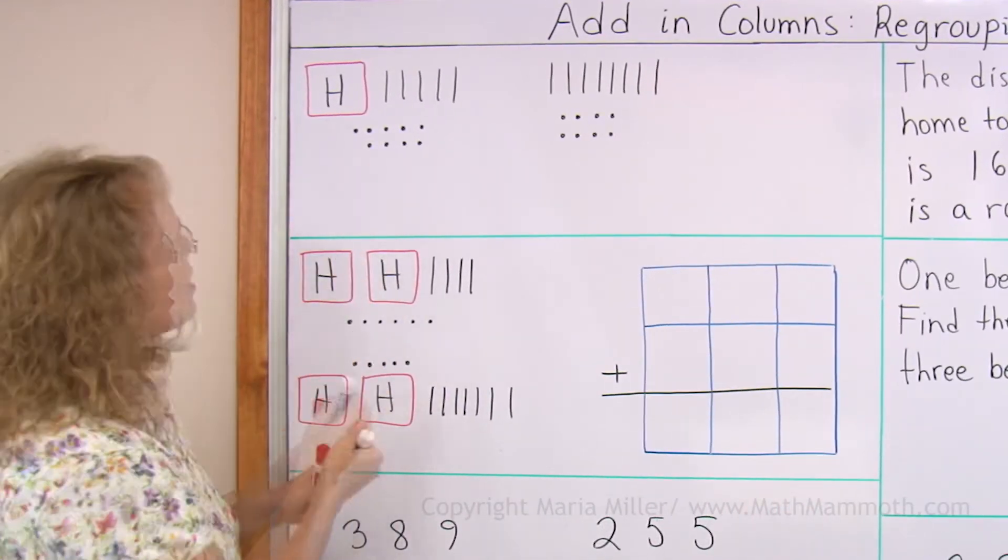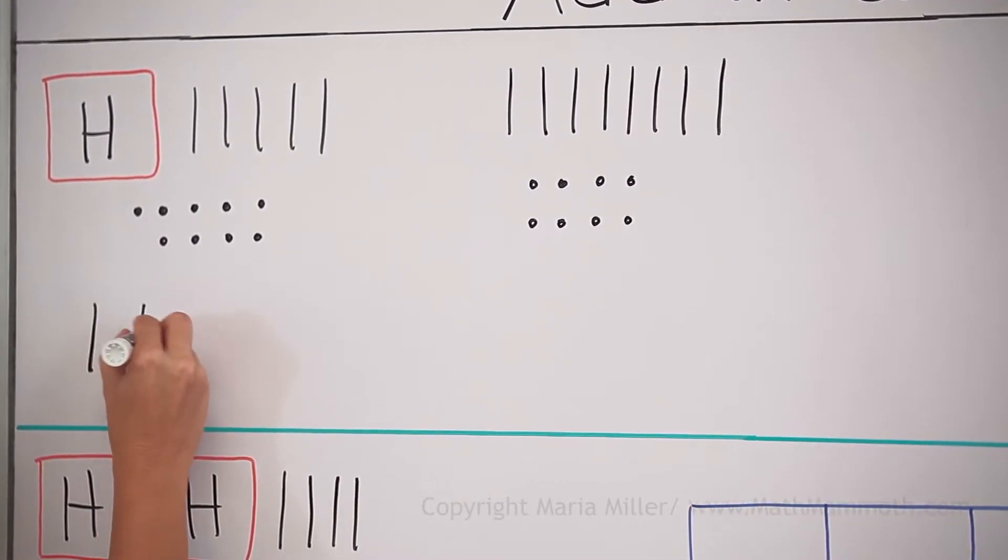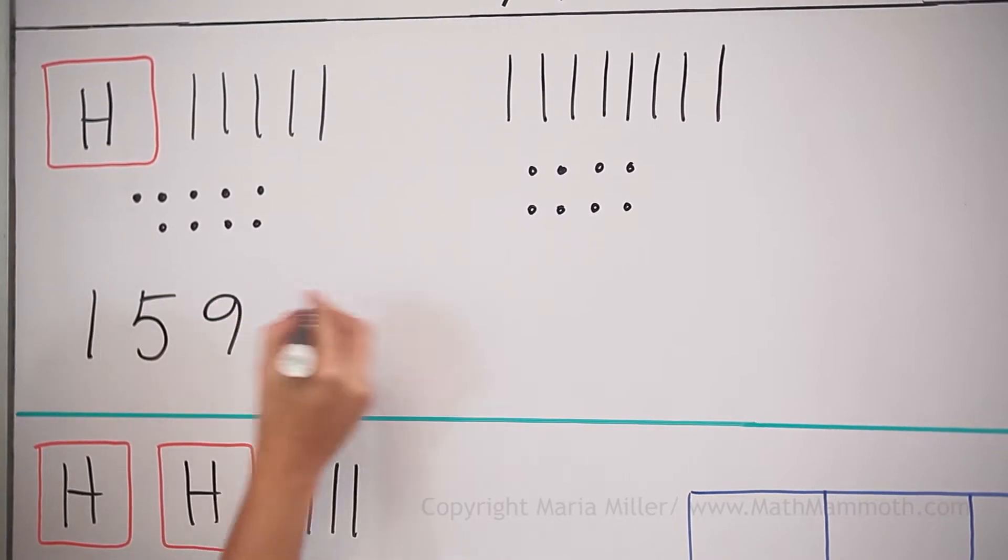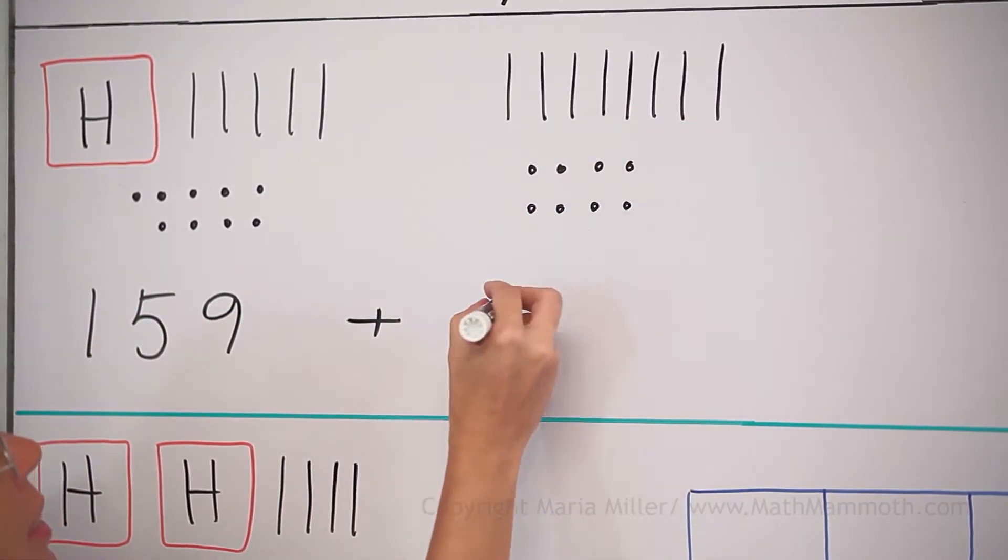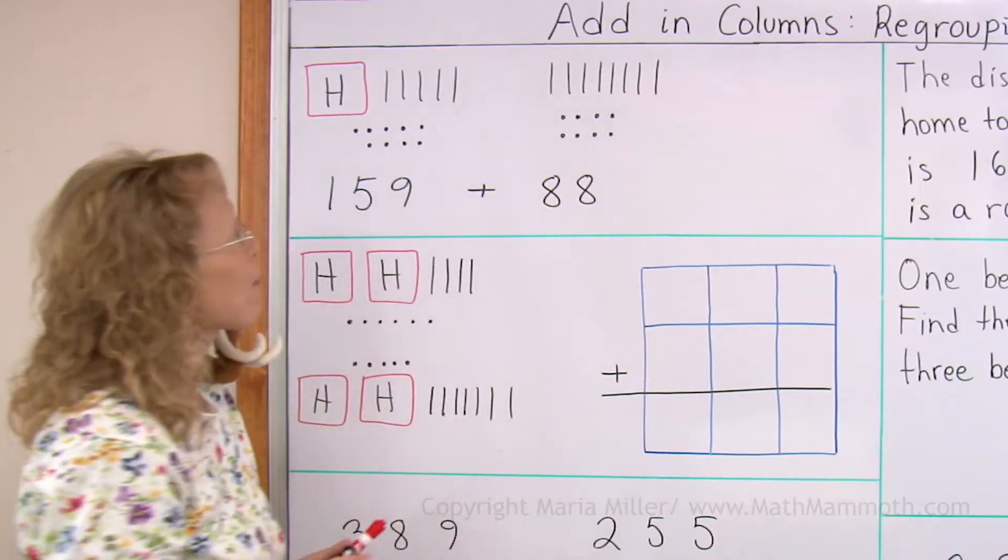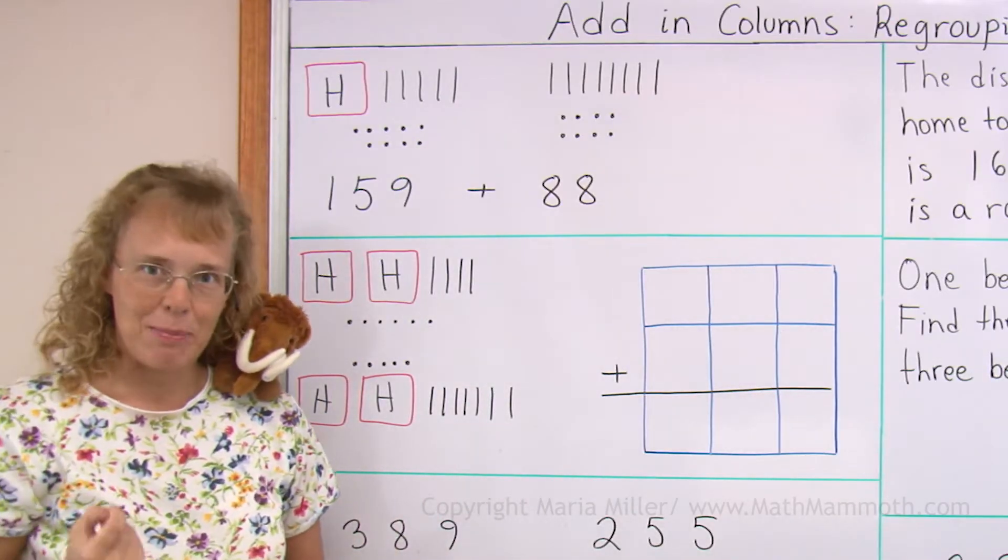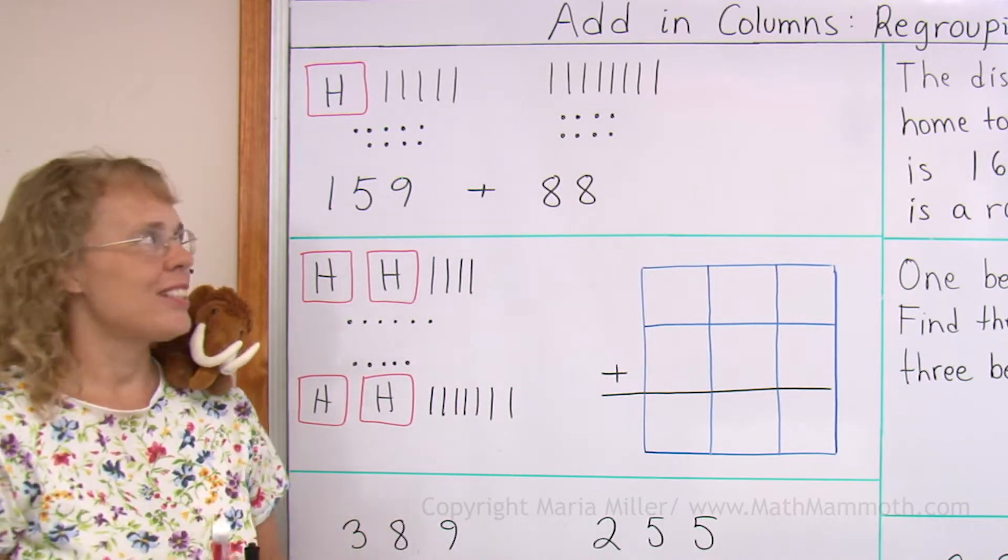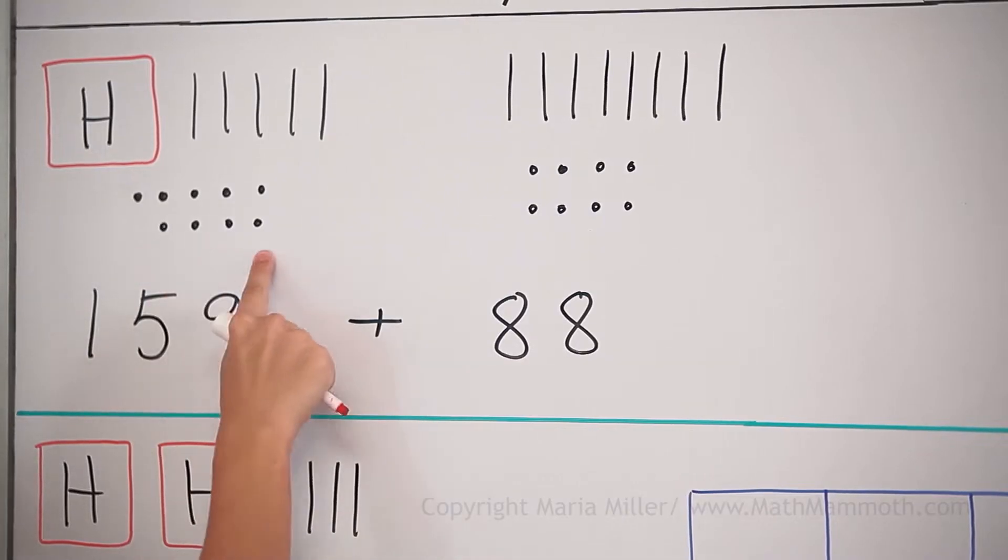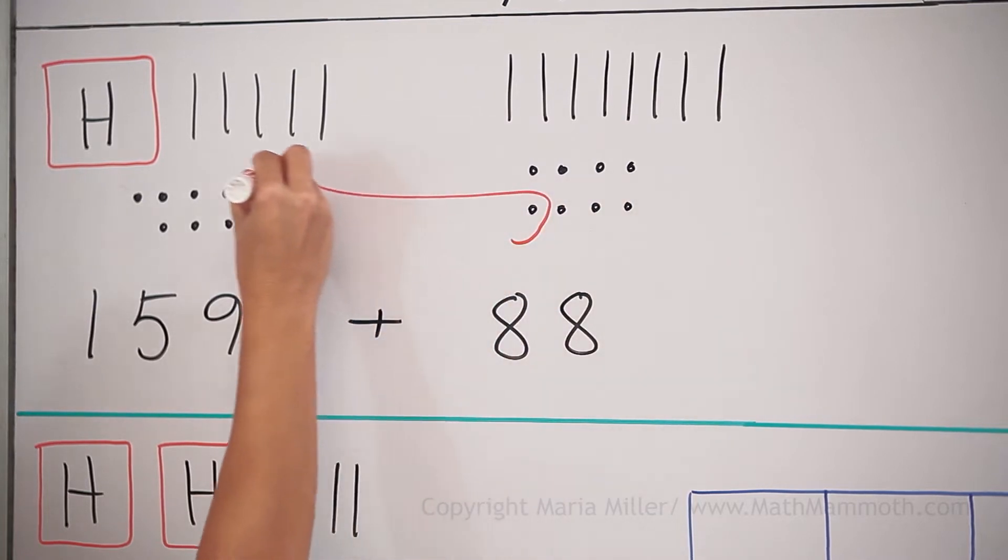I have here 159, and over here 5, 6, 7, 80, 88. Let's see now what happens when I start grouping 10 ones as a 10, because from this 9 and from that one I can make a new 10.